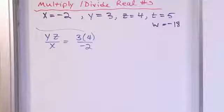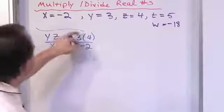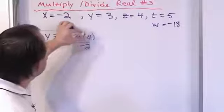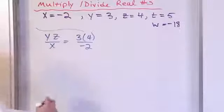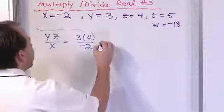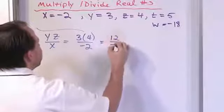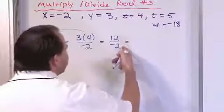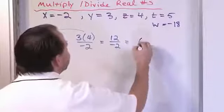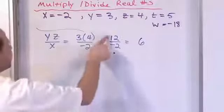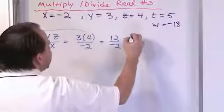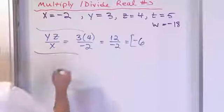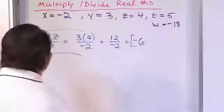Now what do you do? We've got things going on at the top of the fraction, so let's do that first. 3 times 4 is 12. On the bottom, we have negative 2. 12 divided by 2 is 6. These guys have different signs, so you always get a negative — that's going to be negative 6. Very simple, just take it one step at a time.